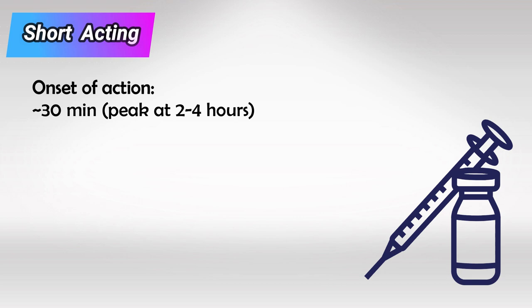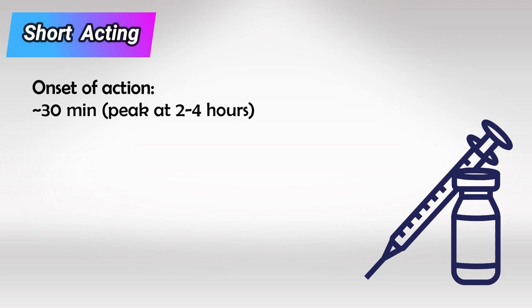Next we have short-acting insulin, which is the regular insulin. It starts working in about 30 minutes and reaches its peak in 2 to 4 hours, and it lasts as long as 8 hours. This is excellent in treating hyperglycemia and DKA.